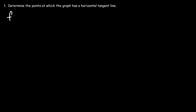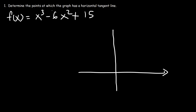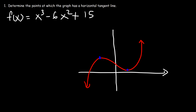Let's determine the points at which the graph has a horizontal tangent line. Given a function x cubed minus 6x squared plus 15, how can we find where this graph will have a horizontal tangent line? A tangent line touches the curve at only one point, while a secant line touches it at two points. A horizontal tangent line occurs at a maximum or minimum of the curve.